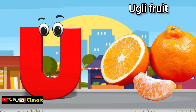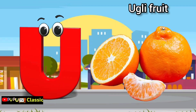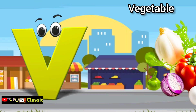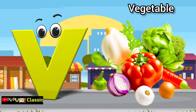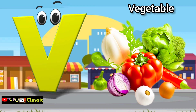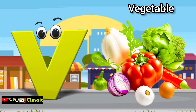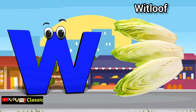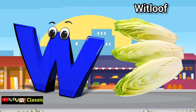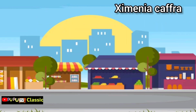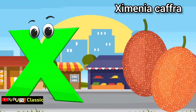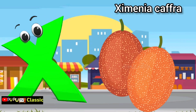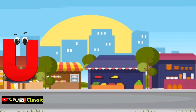U is for ugly fruit, ugly fruit. V is for vegetables, vegetables. W is for whitloaf, whitloaf. X is for zymenia caff, zymenia caff.